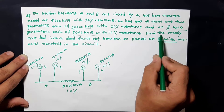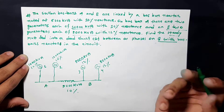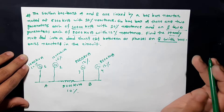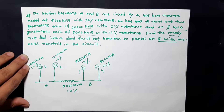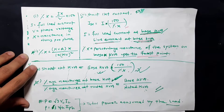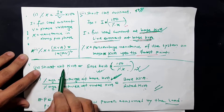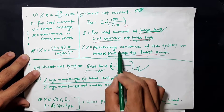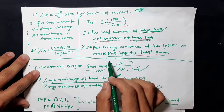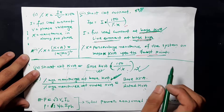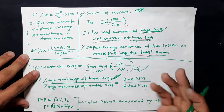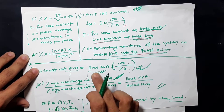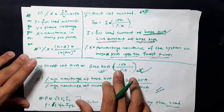We have to find the steady-state short circuit MVA. The short circuit MVA formula is: short circuit KVA equals base KVA multiplied by 100 divided by percentage reactance (%X). Similarly, short circuit MVA equals base MVA multiplied by 100 divided by percentage reactance.